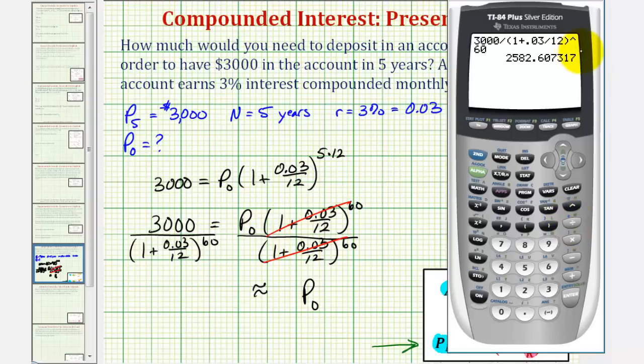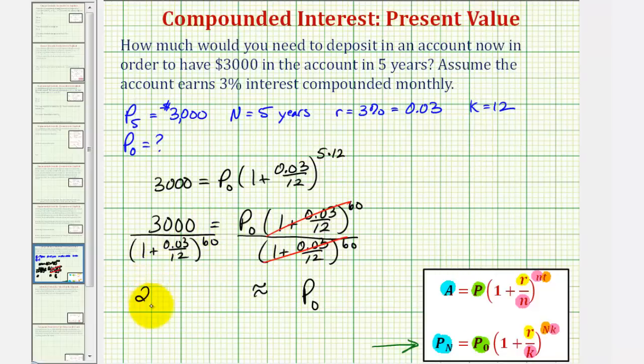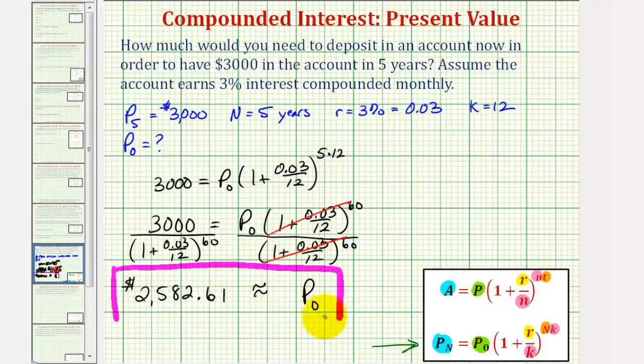Rounded to the nearest cent, we would have $2,582.61. This is the amount that would have to be deposited today to have $3,000 in the account in five years if the account earns 3% interest compounded monthly. This can also be considered the present value of this $3,000 five years into the future.